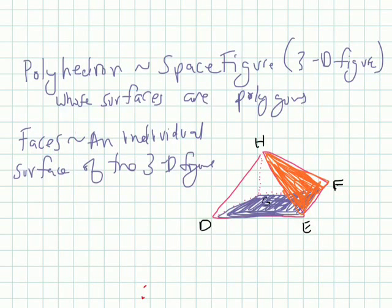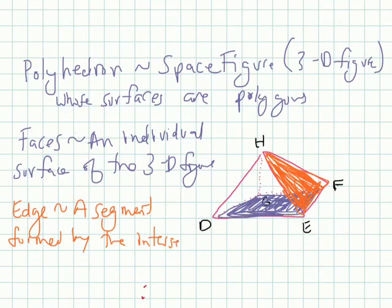Let's look at an edge. An edge is a segment formed by the intersection of two faces. So basically, let's say we have this face here, the rectangle DEFG, and we have this face here of triangle EFH. An edge would be this line right here. It's where they connect. So it's formed by the intersection of this face and this face, which is segment EF is our edge.